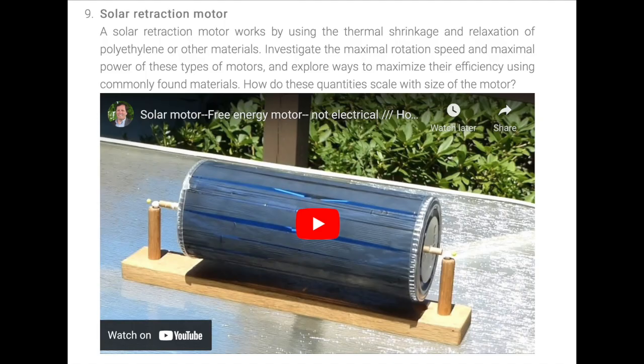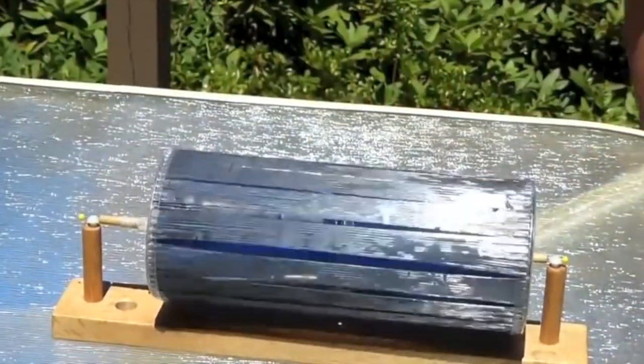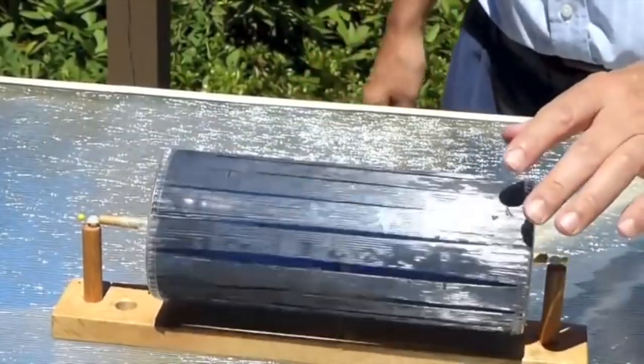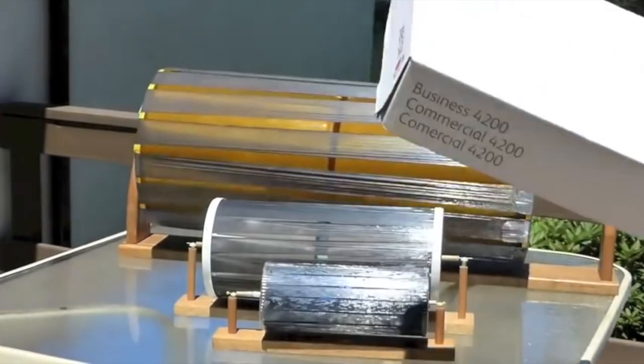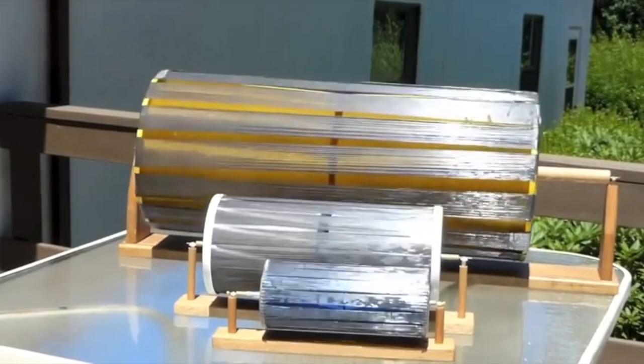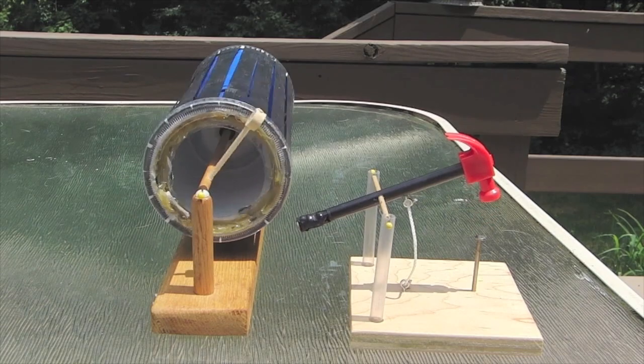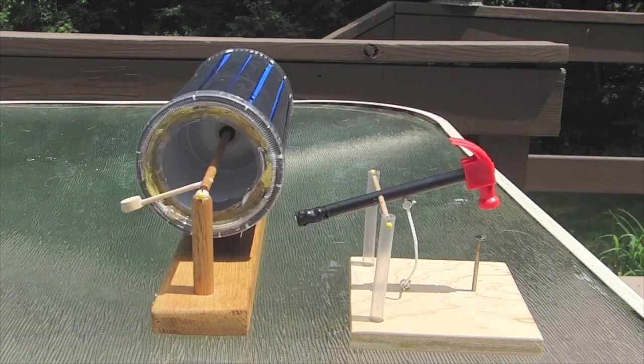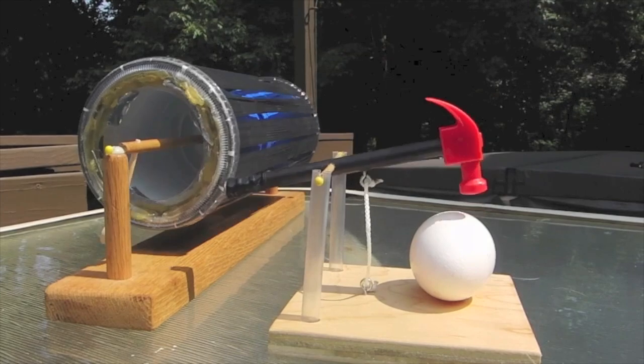Next up, a solar retraction motor. A solar retraction motor works by using the thermal shrinkage and relaxation of polyethylene or other materials. Now this piece in particular I have a personal interest in. I've spent hours and hours on variations of the design and using different materials for it, and I'm still looking for ways to improve its efficiency. I'm really anxious to hear the results of their research. I'm hoping that one day these become a bit more useful.